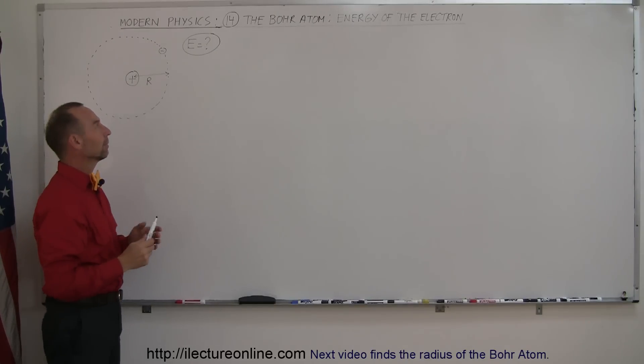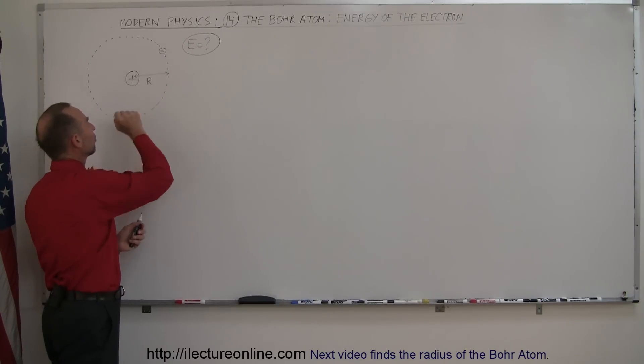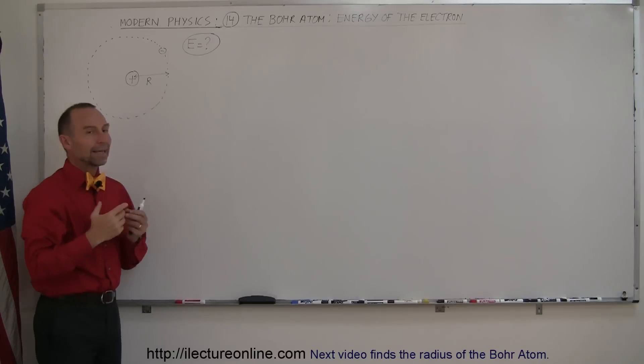The assumption in the beginning was that the electron was circling the proton in a circular orbit, just like a planet orbits the Sun. Assuming that orbit had a radius r, they tried to figure out what the radius of that orbit was and what the energy of the electron was in that orbit.